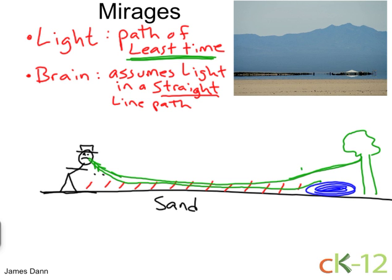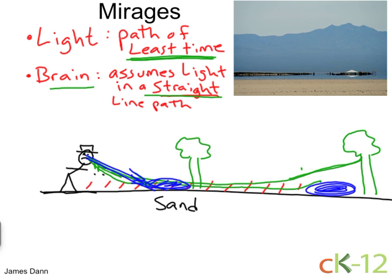The second thing that happens is that the brain assumes a straight line path. The brain just traces these incoming light rays and assumes they're coming in a straight line, because your brain thinks light takes the path of least distance — although that's wrong. And so your brain sees these light rays as emanating from right here, not too far away. That is the physics behind a mirage.